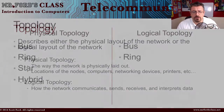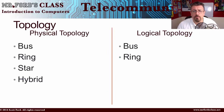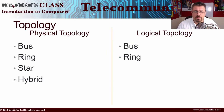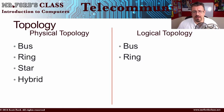Under physical topology, there are four major types to be aware of: the bus, the ring, the star, and a hybrid. Logically, we break it down into either a bus or a ring.